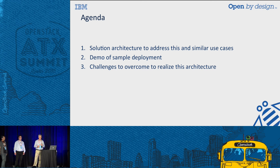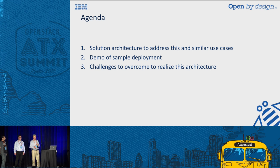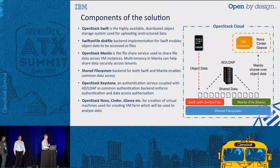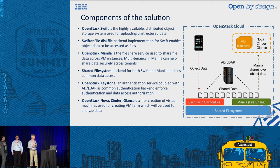We'll do a demo of a sample environment, a sample deployment, and then talk about some of the challenges that still remain or have been solved to put this into a production environment. The overall solution looks like this, and we've got a number of OpenStack components. I'll talk about some of them in more detail next.